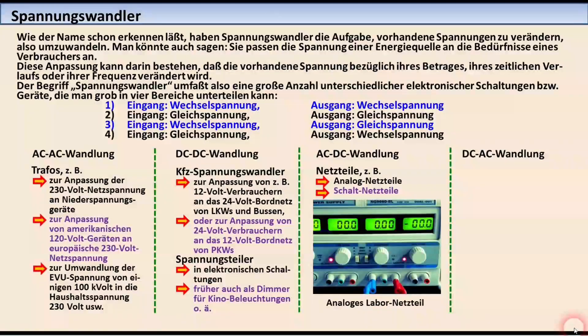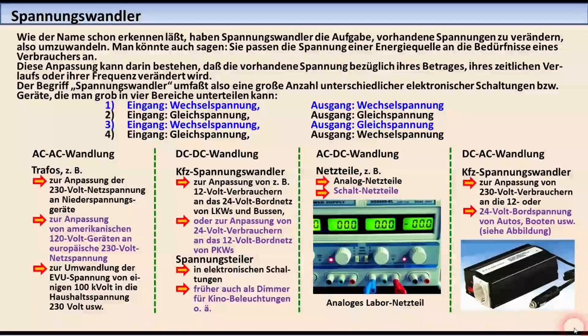Die dritte Gruppe umfasst alle Netzteile, sowohl Analog-Netzteile als auch Schalt-Netzteile. Und die vierte Gruppe schließlich umfasst wieder Kfz-Spannungswandler, aber diesmal zur Umformung von 12 oder 24 Volt Gleichspannung in eine Wechselspannung von 230 Volt.